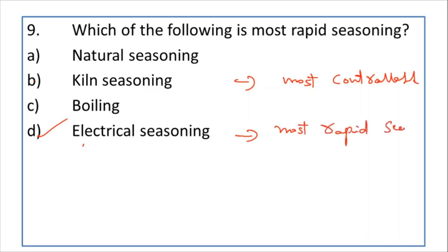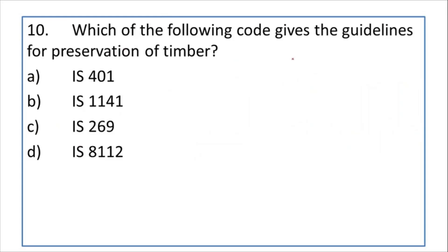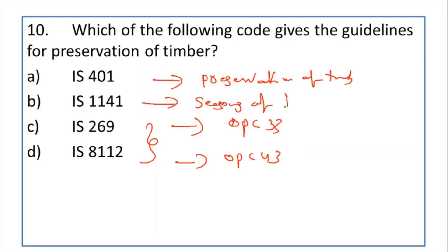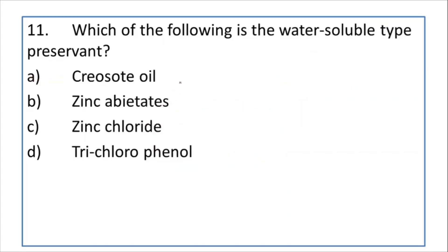In electrical seasoning, current is passed through the timber, which generates heat and evaporates the moisture. The next question: which IS code gives guidelines for preservation of timber? IS 401 is the code for preservation of timber, and IS 1141 is the code for seasoning of timber. So IS 401 is the answer.